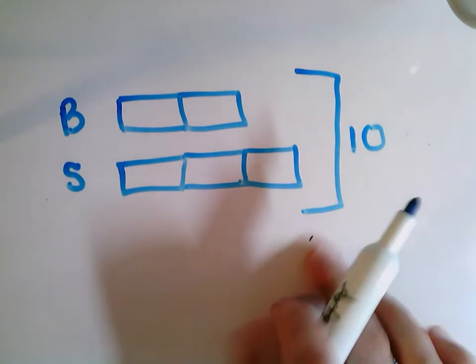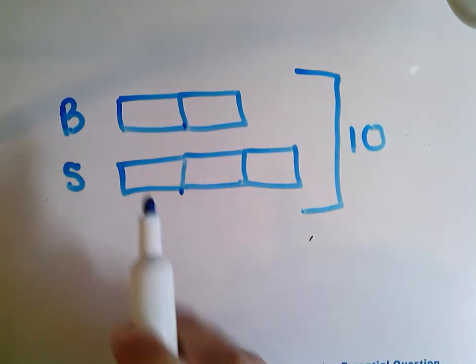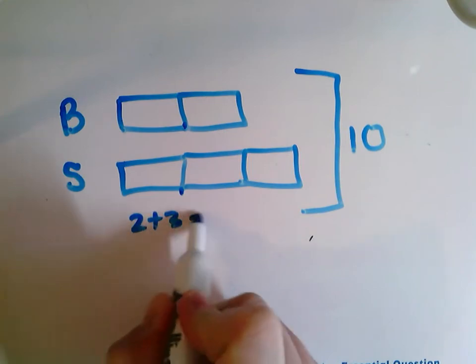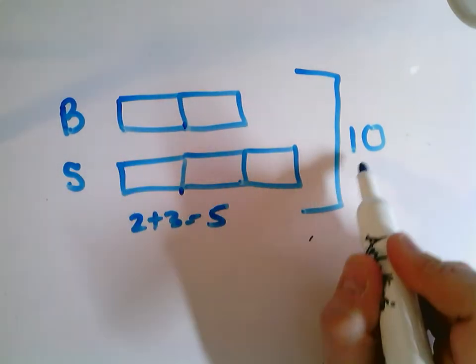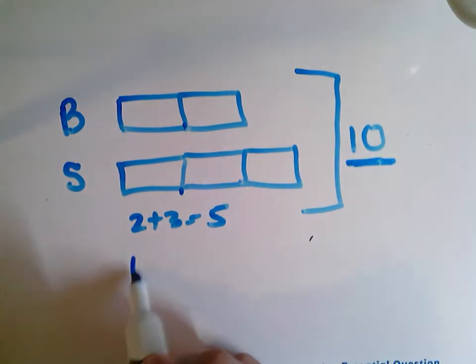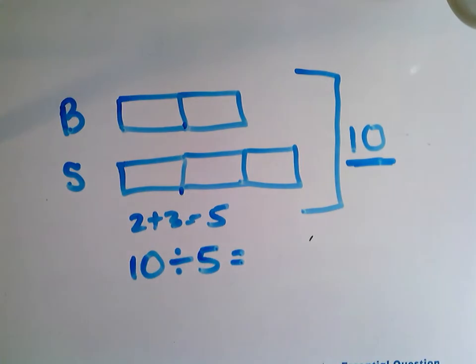So I'm going to look and see my parts. I have three parts. I have two parts and three parts. So two plus three equals five. So five parts all together. So I'm going to take my whole 10. I'm going to divide it by five. 10 divided by five.